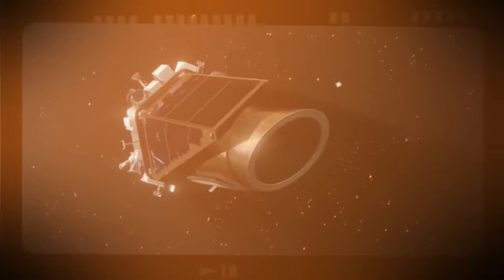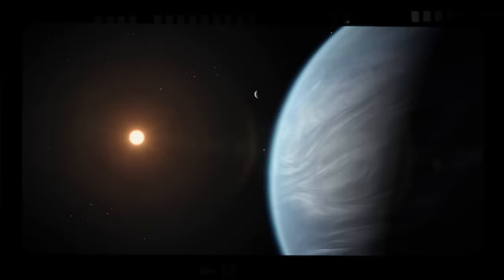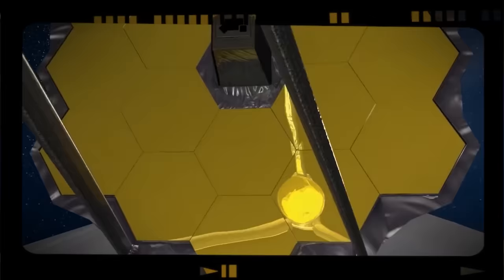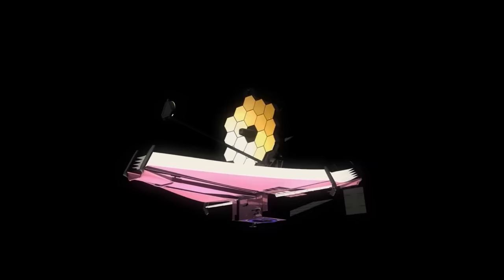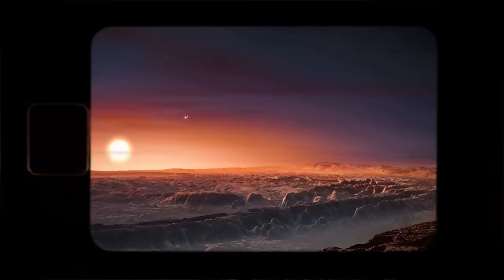Complementing the NIRCAM is the MIRI, designed to observe in the mid-infrared spectrum. This instrument holds the key to studying the thermal emissions of celestial bodies, providing insights into their temperatures, atmospheres, and compositions. The MIRI's ability to detect heat signatures makes it an invaluable tool for investigating the conditions on Proxima b, as it allows scientists to discern not only the planet's surface features, but also crucial details about its atmosphere.